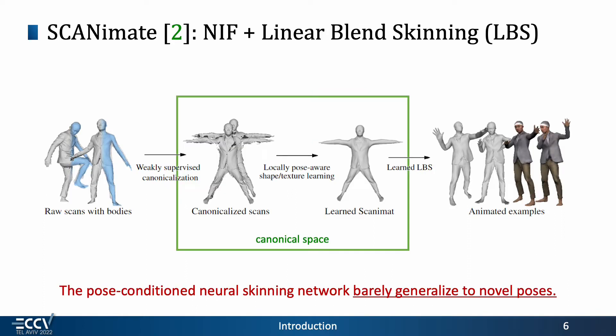Scanimate adopts a Neuroimplicit Function to model a complete human body in a canonical space and uses LBS to bridge arbitrary poses with the rest pose. However, the pose-conditioned neural skinning network barely generalizes to novel poses.